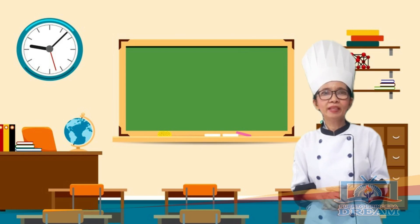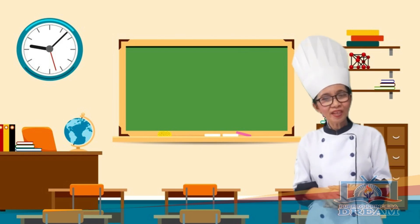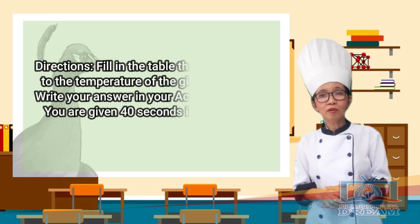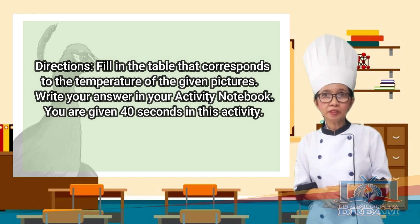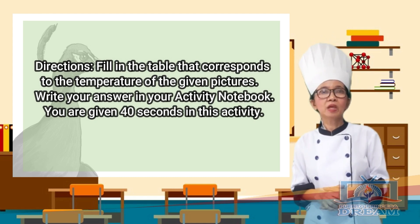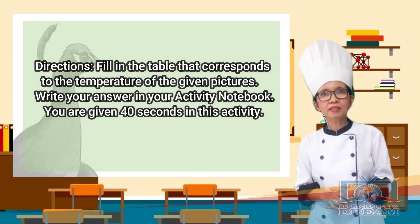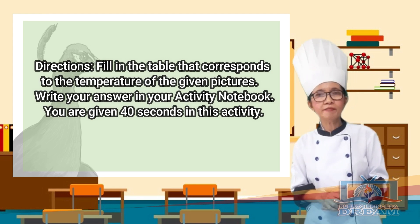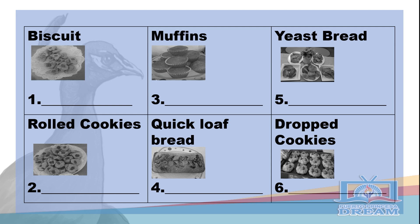Let's proceed to our next activity. Directions: Fill in the table that corresponds to the temperature of the given pictures. Write your answer in your activity notebook. You are given 40 seconds for this activity. Number 1: Biscuits. Number 2: Rolled cookies. Number 3: Muffins. Number 4: Quick loaf bread. Number 5: Yeast bread. Number 6: Drop cookies.